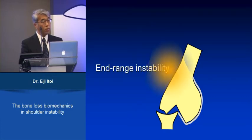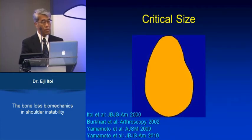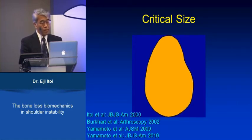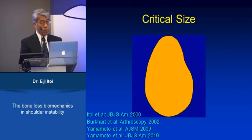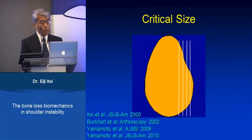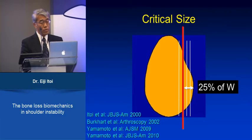This is an important concept for us to understand. What is the critical size of the glenoid defect? It's quite straightforward because the bony defect of the glenoid determines mid-range instability independent of the Hill-Sax lesion. There are several biomechanical and clinical studies showing that the critical size of the glenoid defect is 25% of the glenoid width, which is equivalent to 20% of the glenoid length.